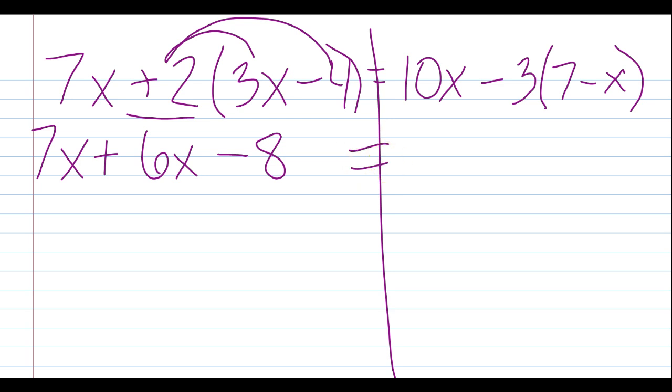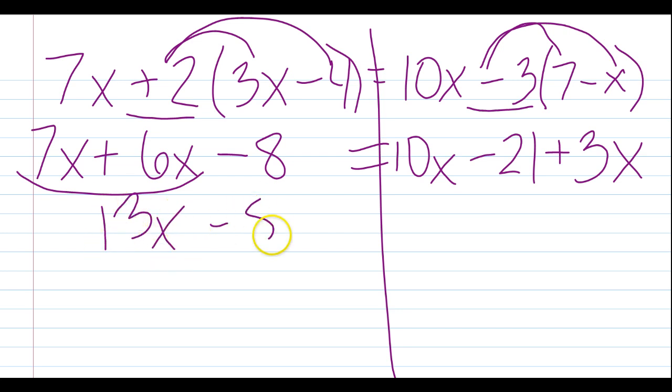On the right side, this time I'm distributing a negative 3 because the sign stays with the number. So, we have negative 3 times 7, so 10x there, and then minus 21. And then negative 3 times negative x would actually become a positive 3x because a negative times a negative makes positive. Now, we should be able to combine like terms. So, back on the left, we're going to combine 7x plus 6x, which is 13x minus 8 equals. On the right side, we're going to do 10x plus 3x, which is 13x minus 21.